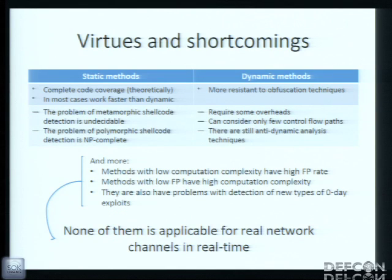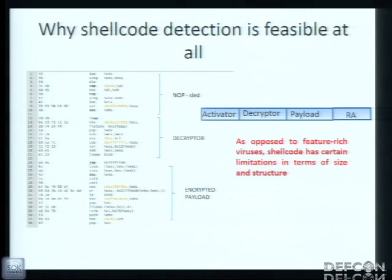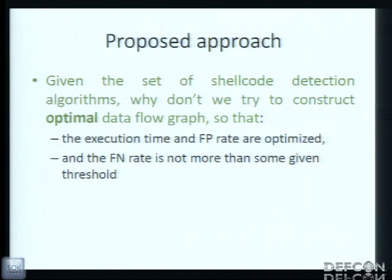Now I'm going to try a little bit of science — why shellcode detection is feasible at all. Compared to viruses which are rich with features, shellcodes have certain size limitations and structure limitations. Given the set of shellcode detection algorithms, why don't we try to construct a classifier which will be optimal in terms of false positive rate and execution time? And at that point, we shouldn't also forget about the false negative rate.